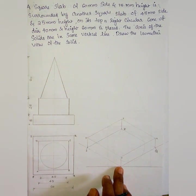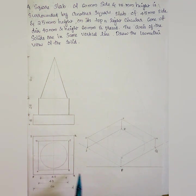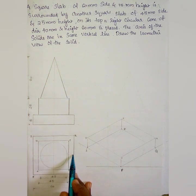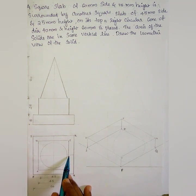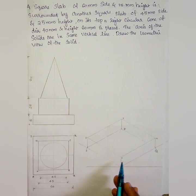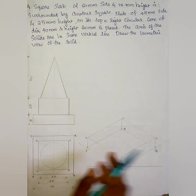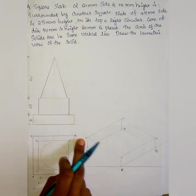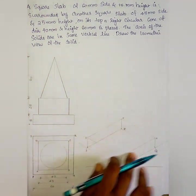Next, we draw the second square slab which is 45mm side. Since the first slab is 60mm and the second is 45mm, the offset is calculated as (60 minus 45) divided by 2, which gives 7.5mm. So the distance from PQ is 7.5mm, from RS is 7.5mm, and from PS is 7.5mm. This centers the second slab on top of the first.